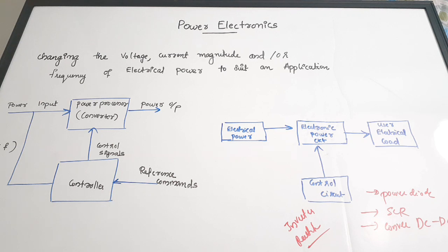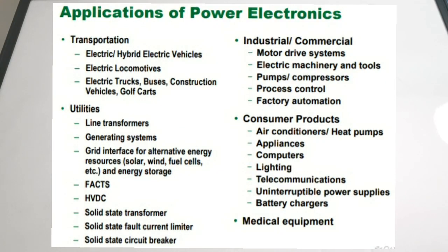Now let us see where we are actually using power electronics — the applications of power electronics in daily life. First, in consumer products: air conditioners, heat pumps, appliances, computers, lighting, telecommunications, UPS (uninterrupted power supplies), SMPS, and battery chargers. In all these areas we use power electronics, with power conversions happening from higher to lower levels or in required formats.